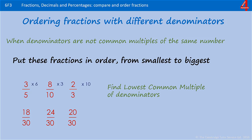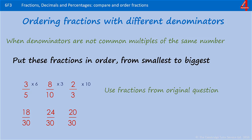Now that the denominators are the same, we can see by looking at the numerators which is the smallest. Because we've got to put in the original fractions from the question, we can see that 18 thirtieths went with 3 fifths, so we're going to put 3 fifths first, followed by 20 over 30 which is 2 thirds, and finally 24 over 30 which is 8 tenths.